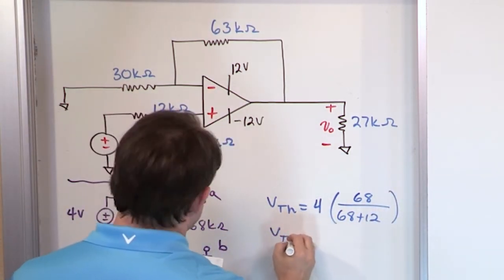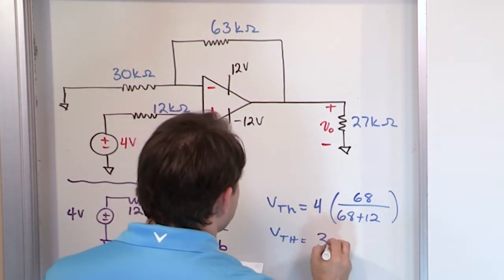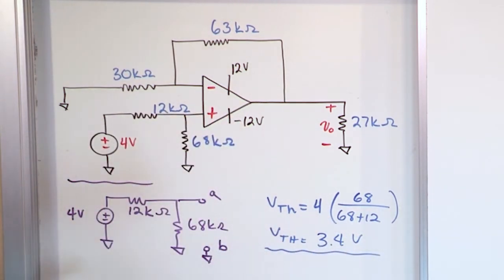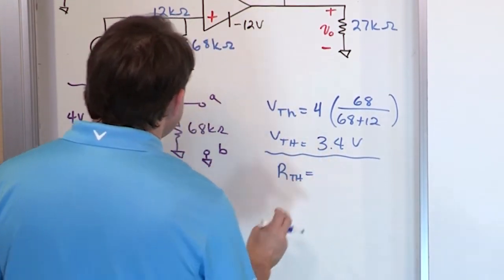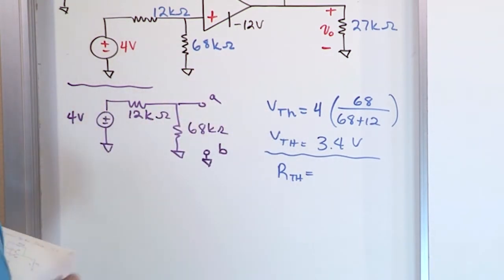So the Thevenin equivalent that you're going to get when you do that, this times this is going to give you 3.4 volts. Now really, you don't need the Thevenin equivalent resistance. But since we're doing it for completeness, we'll just say that the Thevenin equivalent resistance is equal to, if you look backwards this way and you put a short circuit in for that voltage source, it's the parallel combination of these resistors.